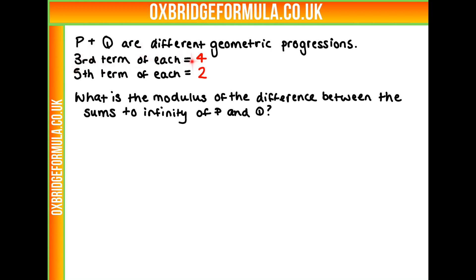We're told that p and q are different geometric progressions. The third term of each progression is 4, and the fifth term of each is 2. And we're asked to find the modulus of the difference between the sums to infinity of both p and q.